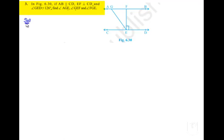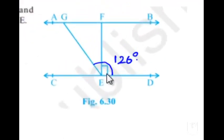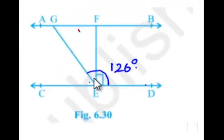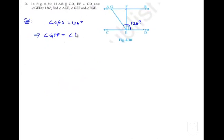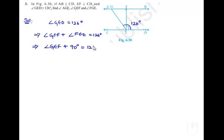Moving on to the solution: it is given that angle GED is equal to 126 degrees. If we observe clearly, angle GED consists of angle GEF and angle FED. Since FE is perpendicular to CD, angle FED equals 90 degrees. Therefore, angle GEF plus angle FED equals 126 degrees.